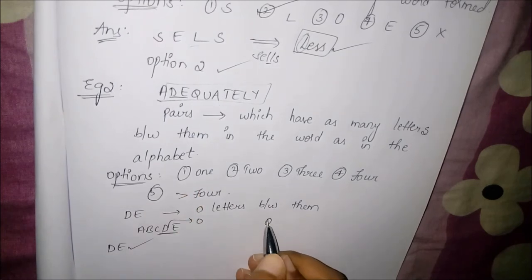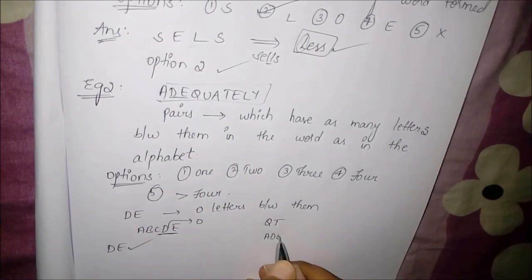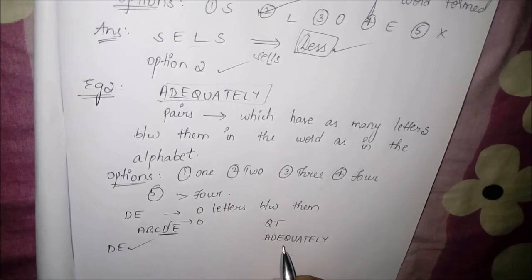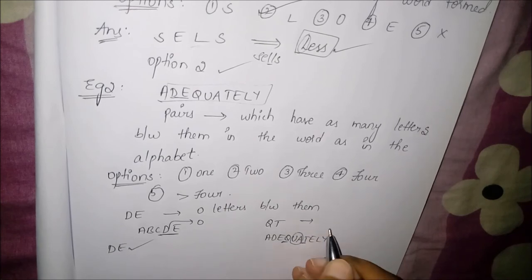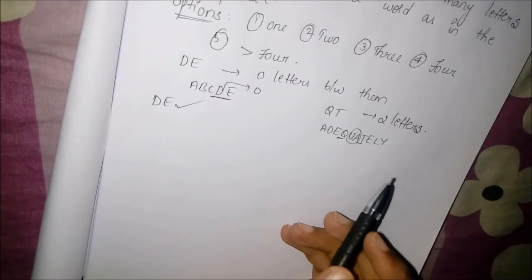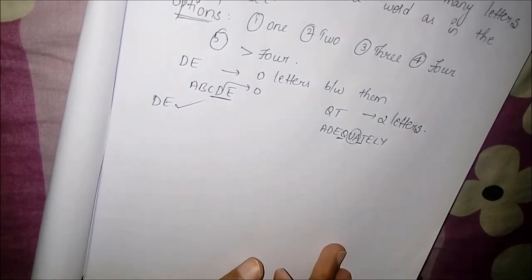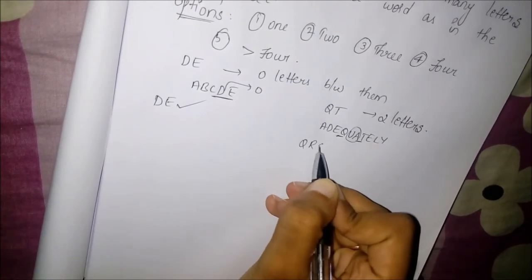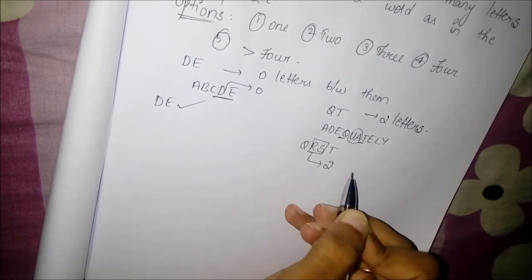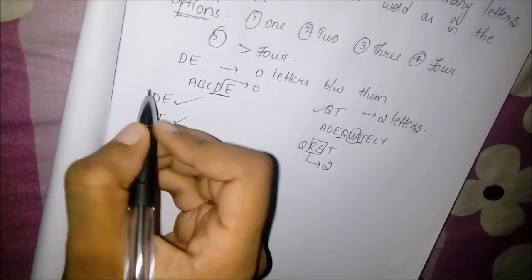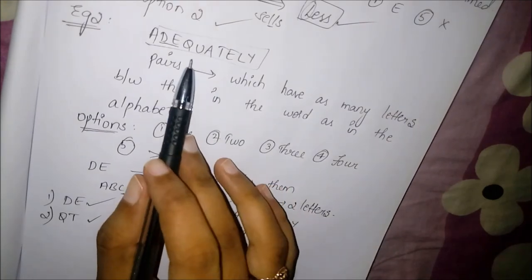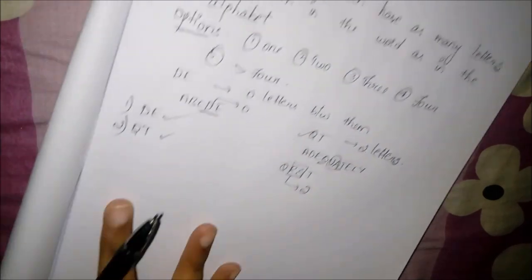Coming to the next pair: if we consider Q and T, in the given word the letters in between Q and T are two letters. And in the A-to-Z alphabet, Q R S T — the letters in between them are also two. So Q and T also form another pair.